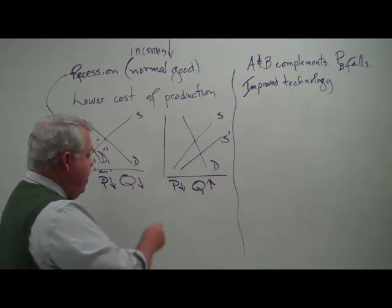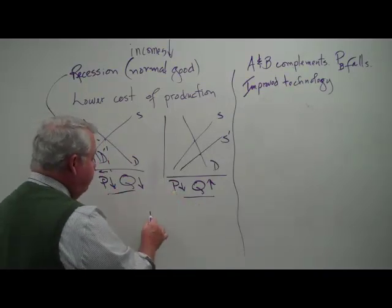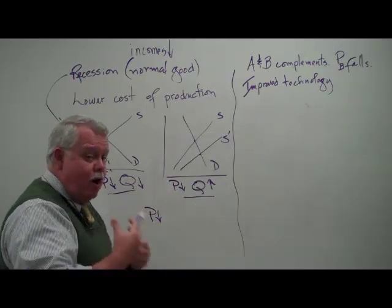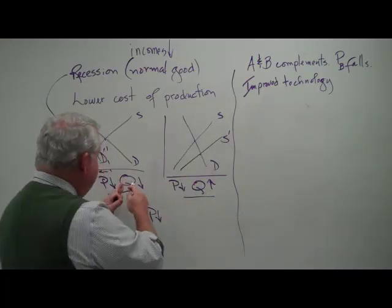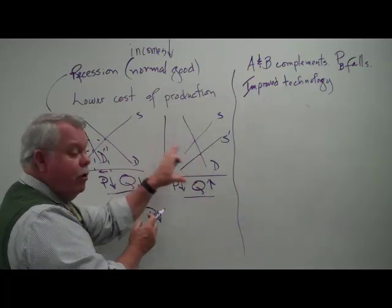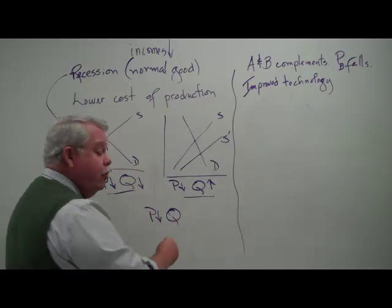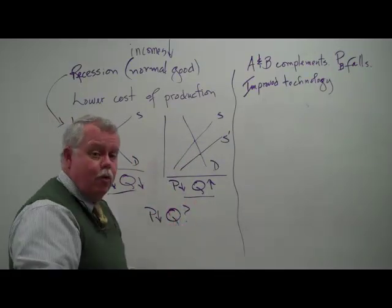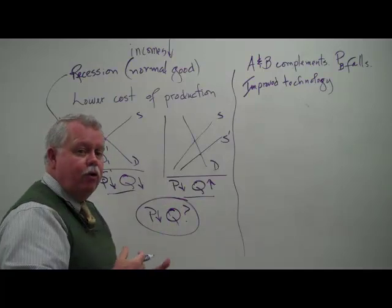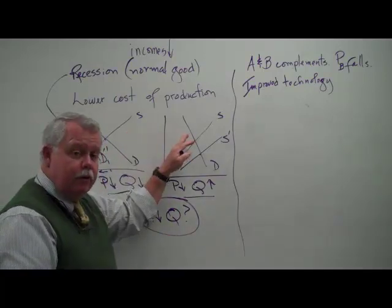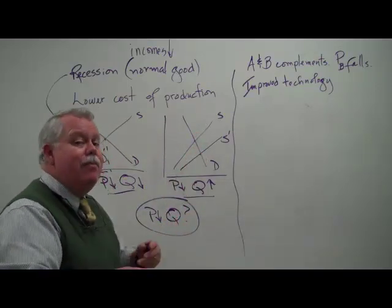So we have both of these things happening at the same time. What do they have in common? In both cases, the price is falling — both shifts are forcing the price down. However, in one case we have a greater quantity being sold, and in the other a smaller quantity being sold. We don't know which of these shifts is going to be the strongest. So we say that the new equilibrium quantity is unknown — indeterminate, uncertain, or ambiguous. That's our conclusion: when both curves are changing, we draw two graphs, and either price or quantity will come up ambiguous.